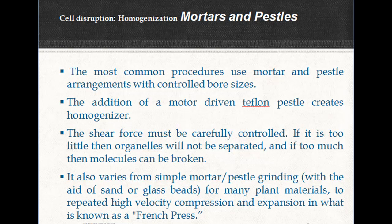To get pure organelles, the cell must be ruptured so that the cell membrane is broken but not the organelle. The process of rupturing a cell is known as homogenization. It varies from simple mortar and pestle grinding for many plant materials to repeated high-velocity compression and expansion in what is known as a French press, which is preferred when molecular dissociation is required.